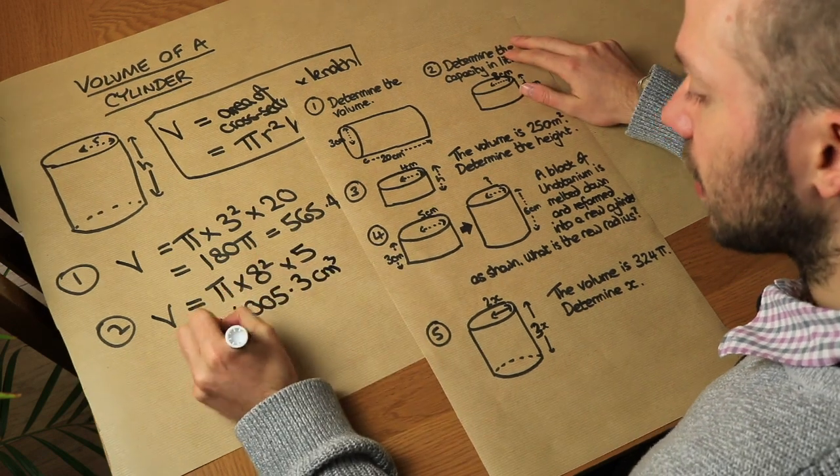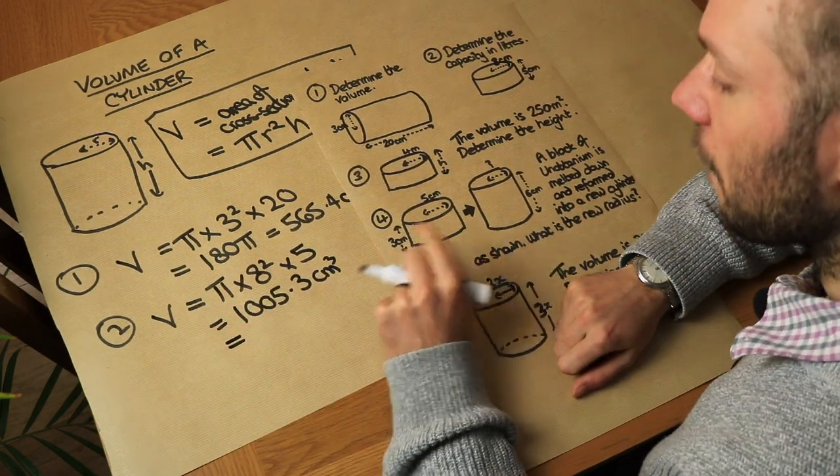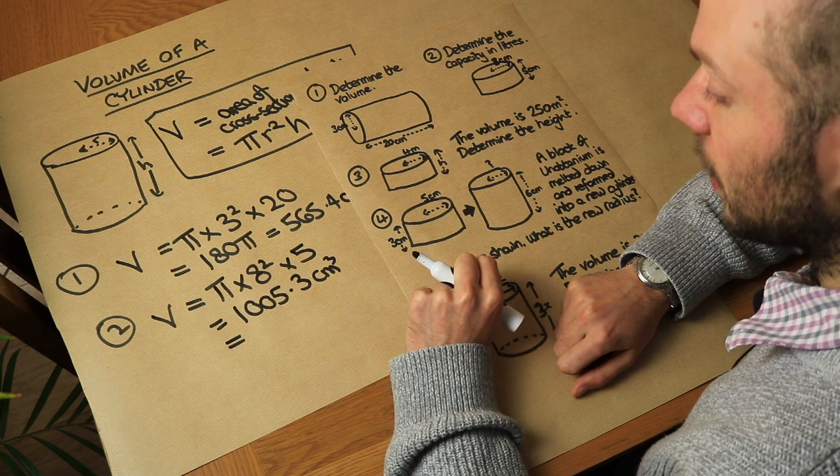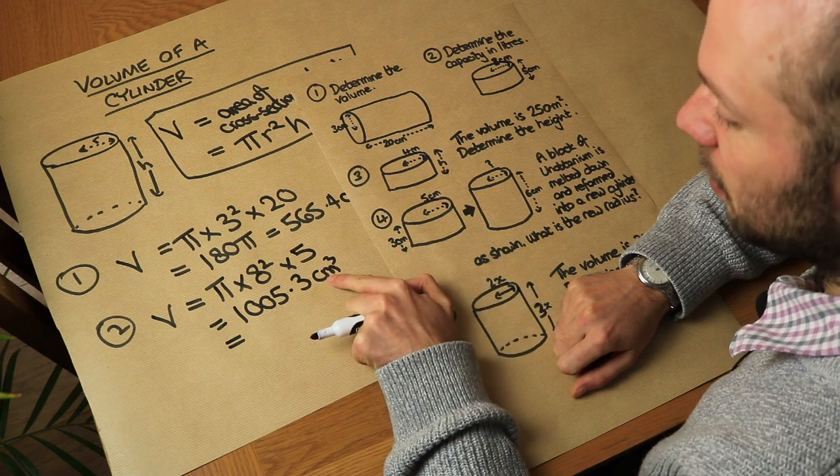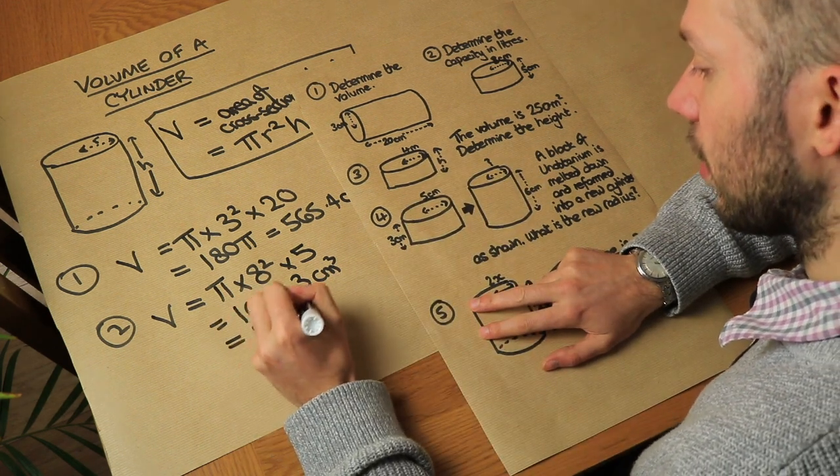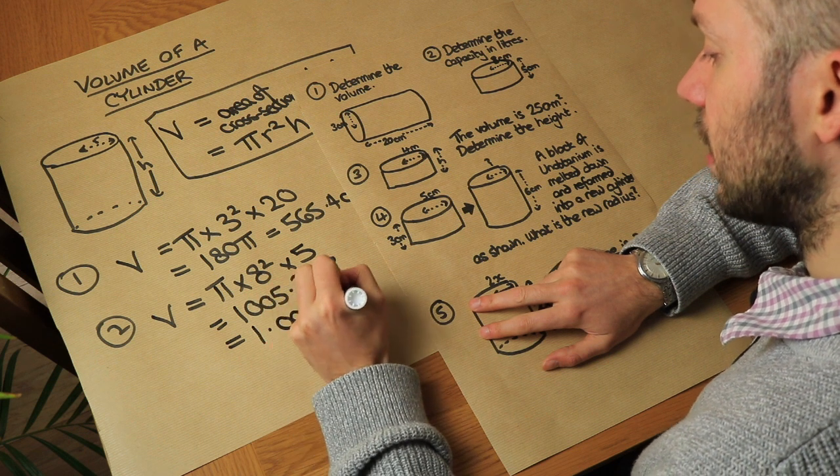Now to convert it to liters you just need to know that a thousand centimeters cubed is equal to one liter. So to get from centimeters cubed to liters we just divide by a thousand, so dividing this by a thousand we get 1.0053 liters.